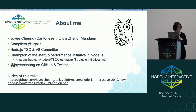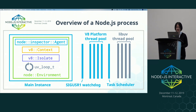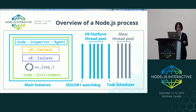So enough about me. Let's talk about Node. This is the process model of Node and also the goal of the bootstrap process. In a Node process, you usually have one main Node instance running on the main thread, which includes an inspector agent, a V8 context, a V8 isolate, a libuv event loop, and a Node environment. There is also a SIGUser1 watchdog thread for handling the signal that users send to Node to make the inspector start listening on the port. There is also one thread pool for V8 and its task scheduler thread, and one thread pool for libuv to serve asynchronous file system operations.